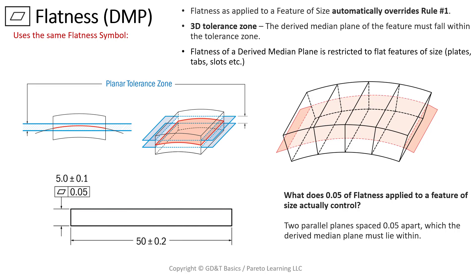We get questions about why there's no stated difference on a drawing when flatness is applying to the derived medial plane versus a surface. There's only one symbol for flatness, just like for straightness there's only one. But we can have feature of size straightness and feature of size flatness — we just have to pay attention to how it's applied. That's also the case for datums in general. With orientation controls like angularity, perpendicularity, and parallelism, they can be applied to a surface or a feature of size, and there will be two different sets of rules.